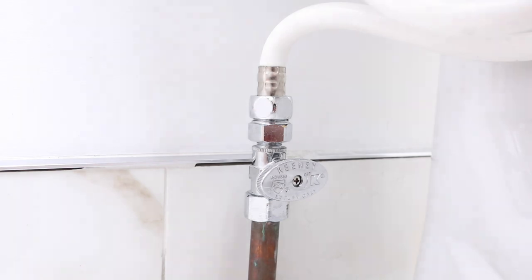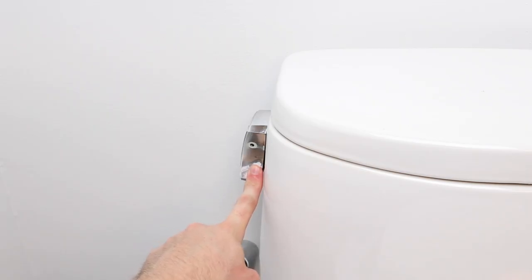Start off by turning off your water supply. It's usually right behind your toilet. Then flush your toilet to make sure you have no water left in the tank.